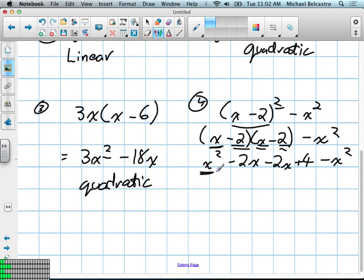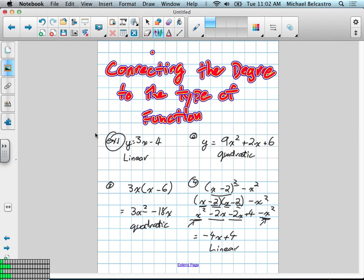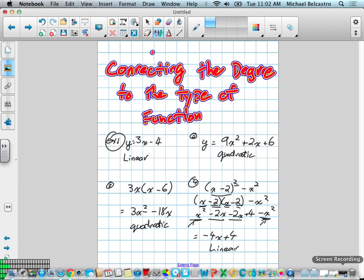Collect our like terms, where we have x squared minus x squared, and negative 2x minus 2x. That'll give us negative 4x plus 4. These two will cancel out. What do we have now? This is linear. This is in standard form. So we had to do a little bit of work in order to figure those other two out.